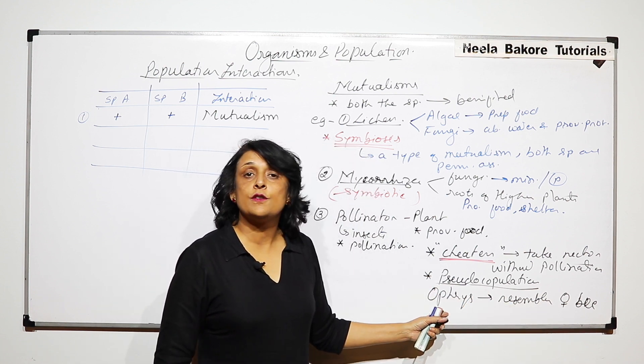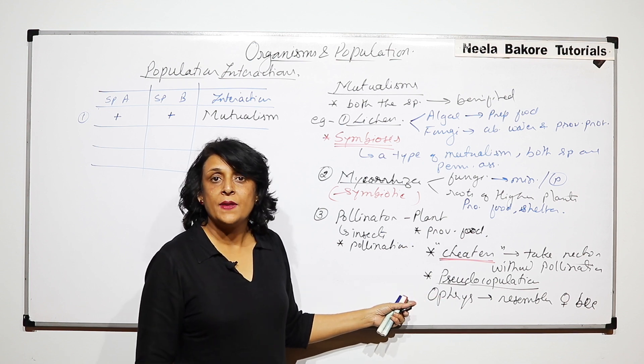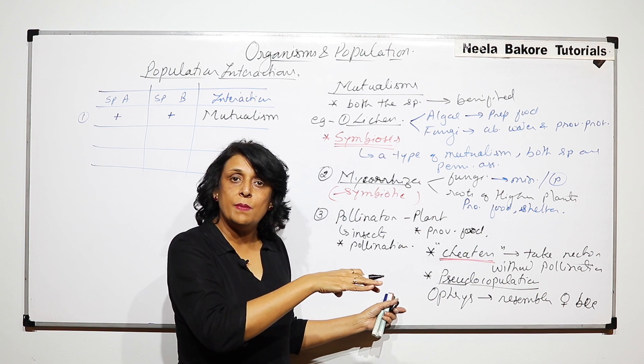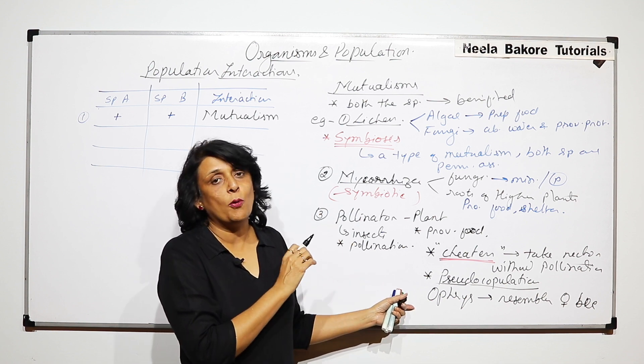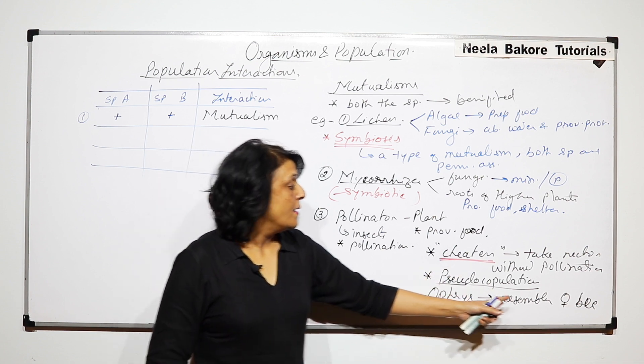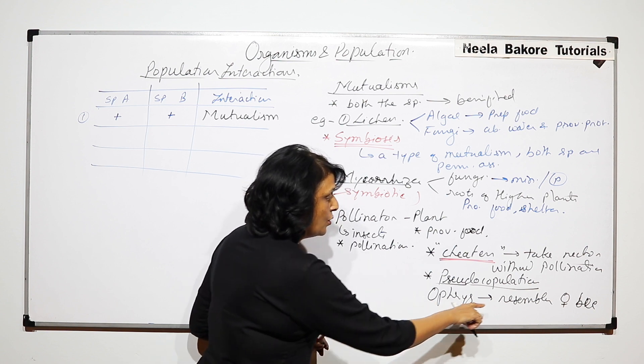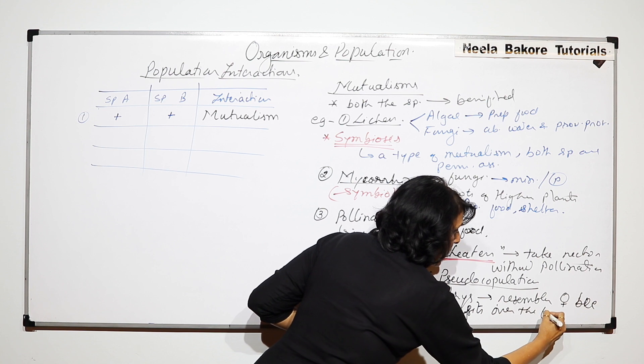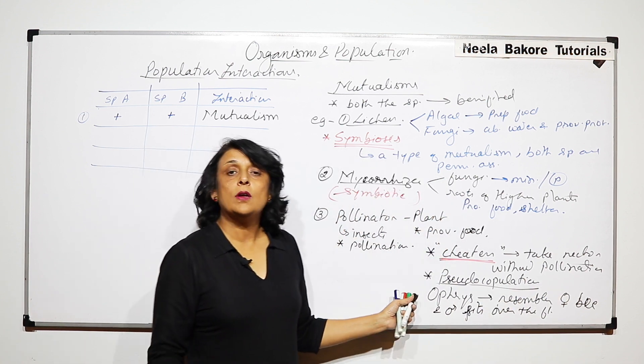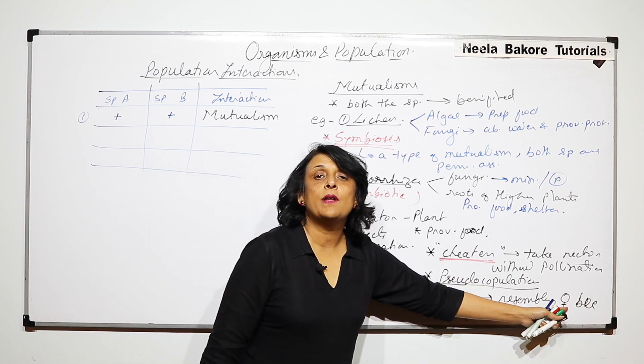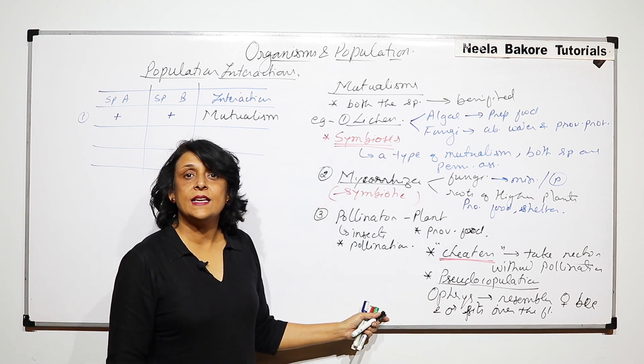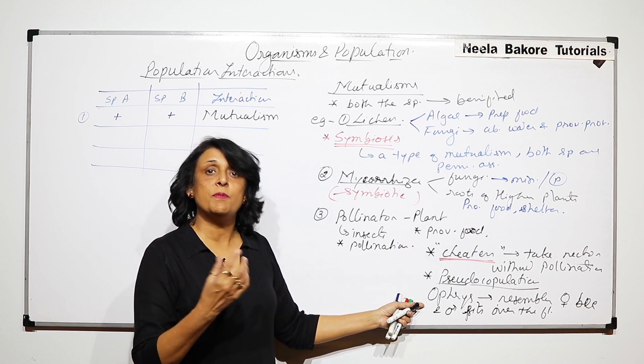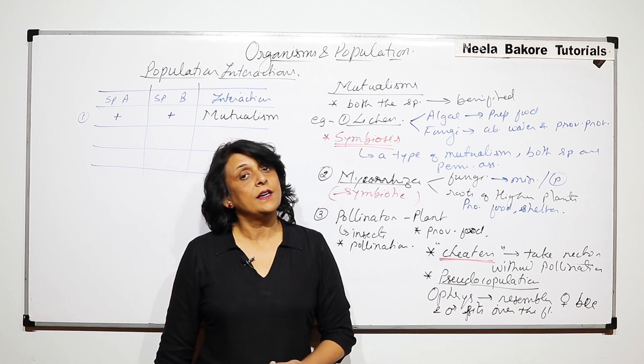So now the male bee sits on this flower thinking of copulating it. So it sits on the flower thinking that it is a female bee and then when it goes to another flower thinking that that is another female bee, it is actually helping in transferring the pollen grain. But the Ofris is getting benefited but the bee is not getting benefited. Here, Ofris resembles the female bee and the male sits over the flower thinking of copulation. So the pollen grains get dispersed but there is no reproduction in case of the bees. In these cases, the plant got benefited because the pollens were taken but the insect or the pollinator did not get any advantage.